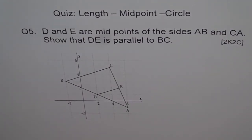Question 5: D and E are midpoints of the sides AB and CA. Show that DE is parallel to BC. So what will you do here? Think, write down your solution and then look into my suggestion.